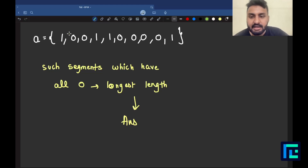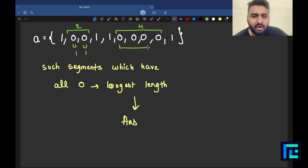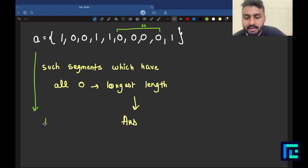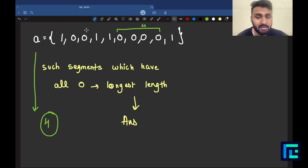In this example, the segment of all zeros here has a length of two. This segment of all zeros has a length of four. You can also have a length of three. But out of all possible segments, the best one is clearly the segment with length four. So the answer for this particular array turns out to be four — the longest segment of consecutive zeros.